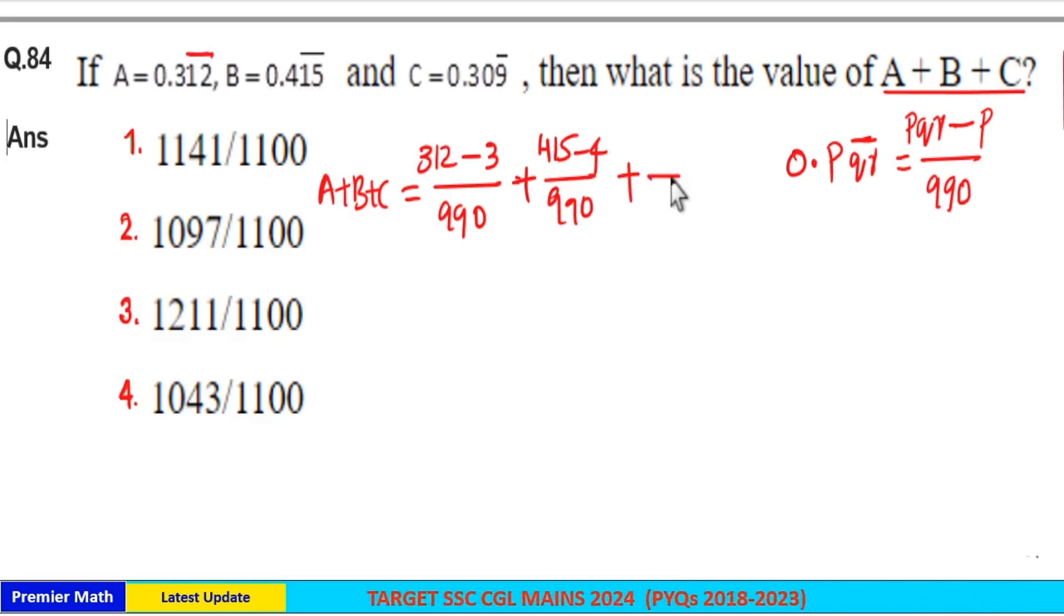And in C, one number is repeating. So put 1 nine in the denominator. And two numbers are not repeating. So put double 0 after 9. So 900 is the denominator. And in numerator write 309 and subtract 30. Here 30 is not repeating. Two numbers are not repeating. So subtract 30 from 309. That is the numerator.